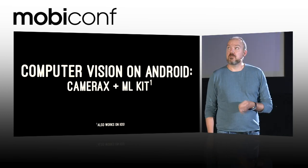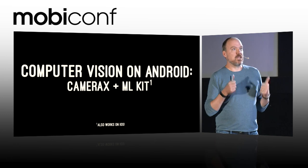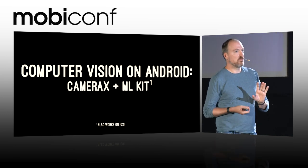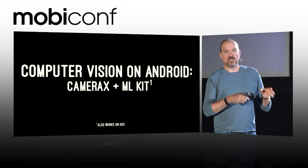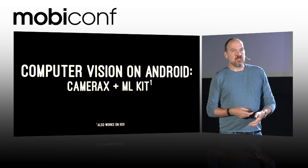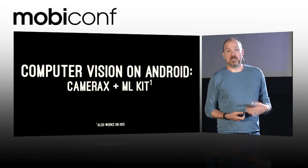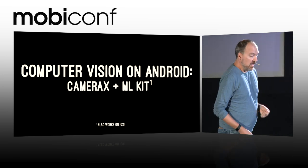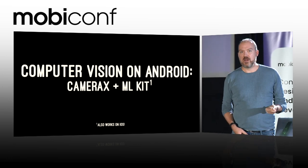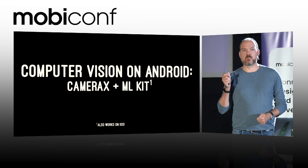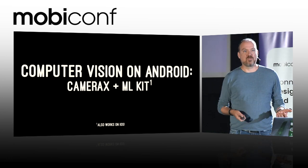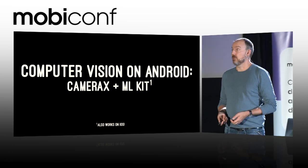Everything I'm going to talk about today can be done with ML Kit. Computer vision on Android today is CameraX plus ML Kit. This is what you should focus on if you're going to implement anything from simple barcode scanning to really advanced machine learning image labeling. The nice thing is that while CameraX makes it easy to use camera on Android, ML Kit also works on iOS, which is another reason why you'd probably like to use ML Kit for all your image processing.